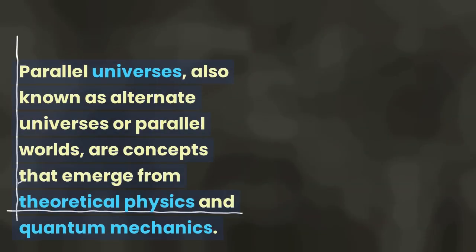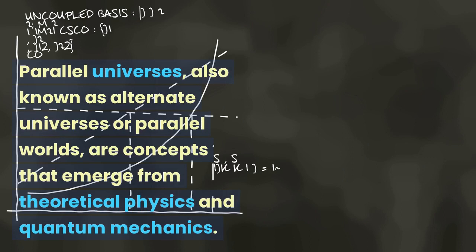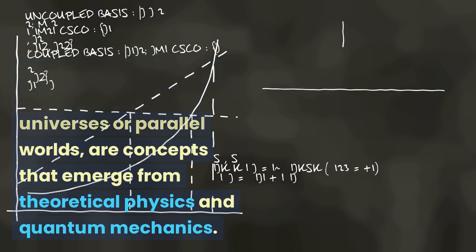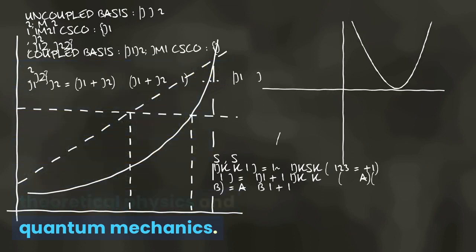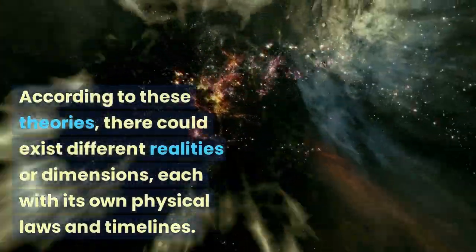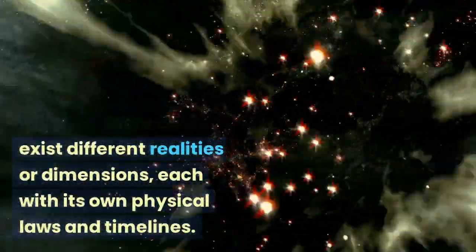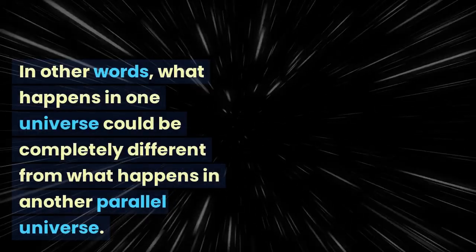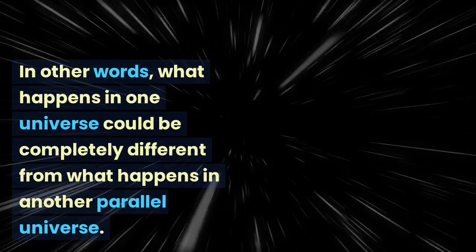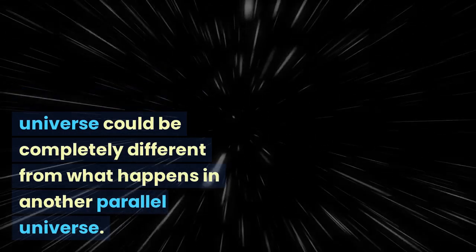Parallel universes, also known as alternate universes or parallel worlds, are concepts that emerge from theoretical physics and quantum mechanics. According to these theories, there could exist different realities or dimensions, each with its own physical laws and timelines. In other words, what happens in one universe could be completely different from what happens in another parallel universe.